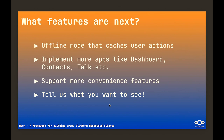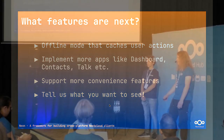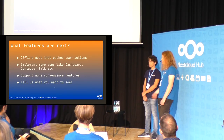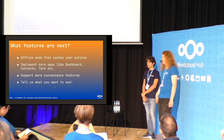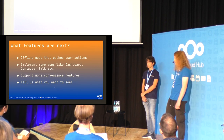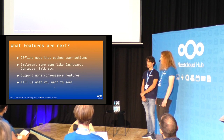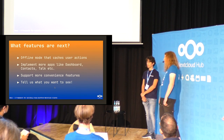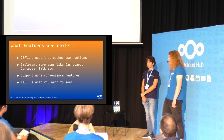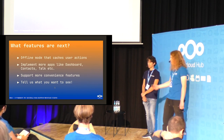What do we plan next? We want to implement an offline mode that caches user interactions. So for example, if you delete a file, edit a note, or send a message in talk, then that will be stored offline, and once you are online again it will be executed. This will work in a generic way so that all the apps can leverage it easily. Next, we want to implement some more apps, for example the dashboard app, the context app, and the talk app — and for talk we even have a prototype available. We also want to implement more convenience features, like notify push, which decreases the load on the server and makes the app more reactive. And of course, we want to know what you want to see, so please let us know.